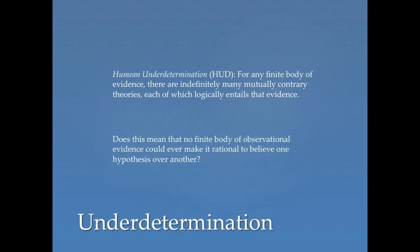This is called by Larry Laudan the Humean underdetermination problem: for any finite body of evidence, there are indefinitely many mutually contrary theories each of which logically entails that evidence. The question is, does this mean that no finite body of observational evidence could ever make it rational to believe one hypothesis over another? If there are an indefinite number of mutually contrary theories entailing the evidence we have, how do we determine which hypothesis is right?